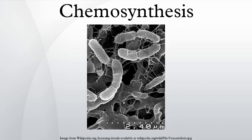Chemotrophs, organisms that obtain carbon through chemosynthesis, are phylogenetically diverse, but groups that include conspicuous or biogeochemically important taxa include the sulfur-oxidizing gamma and epsilon proteobacteria, the aquificales, the methanogenic archaea, and the neutrophilic iron-oxidizing bacteria.